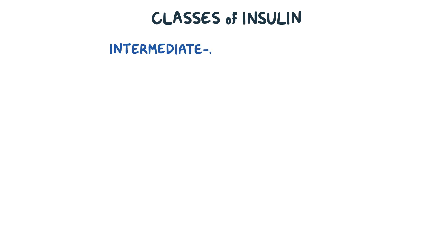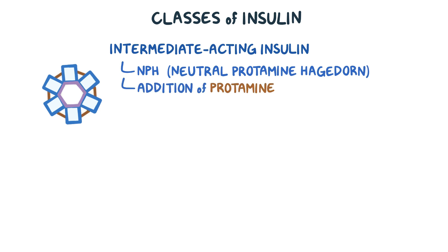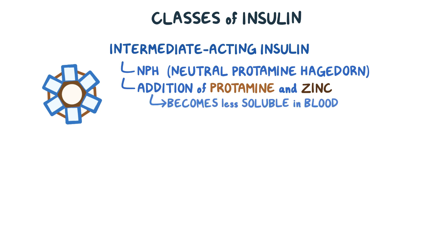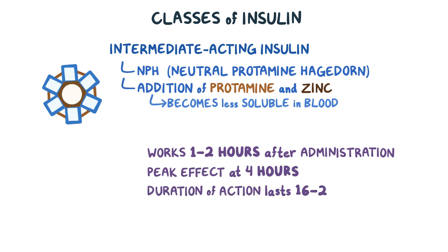Next up is the intermediate-acting insulin, known as NPH insulin, which stands for neutral protamine hagedorn. It's created through the addition of protamine and zinc to regular insulin. These additional elements cause NPH insulin to become less soluble in the blood than regular insulin. As a result, NPH insulin only becomes active around one to two hours after administration, with a peak effect after four hours, and lasts for 16 to 24 hours. Due to its long duration of action, it's used as a basal insulin.